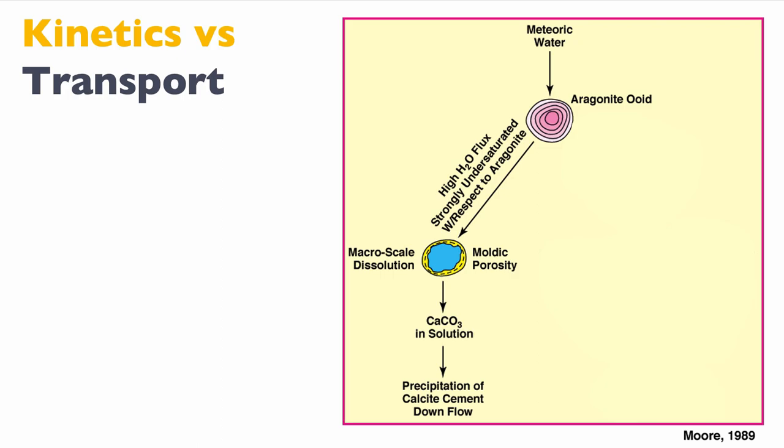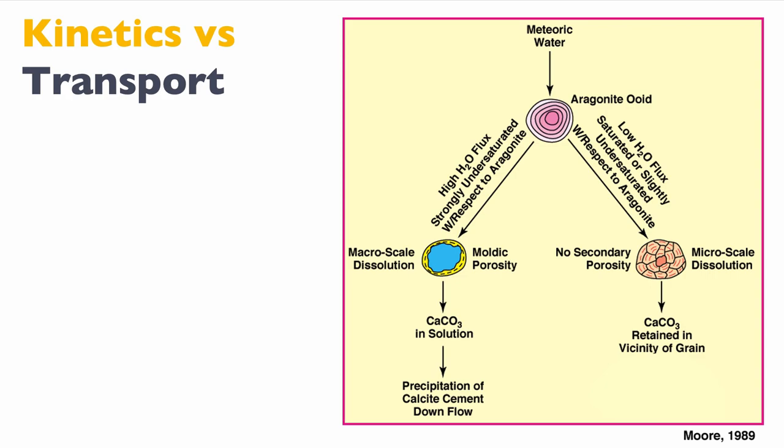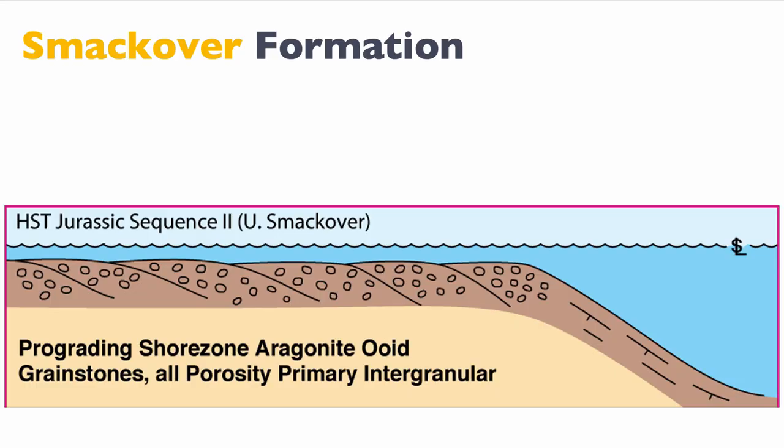That's how you create moldic porosity, such as the moldic porosity we saw in Gawar. Now, if we take a counterexample with a low flux of water and a solution that is either saturated or very slightly undersaturated with respect to aragonite, we dissolve the aragonite of the ooid, but we immediately precipitate a secondary calcite within the ooid. So we have a recrystallization — we lose the texture of the ooid but preserve its shape. The calcium carbonate is retained close to the site of dissolution, which means no precipitation of calcite downflow. These two examples show how important kinetics and flow are in explaining whether or not we will preserve porosity during meteoric dissolution.